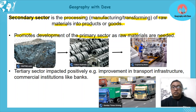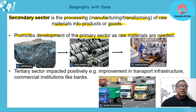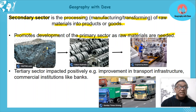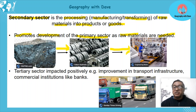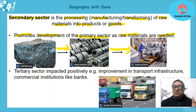Look at this example: iron ore is mined, then turned into iron and steel, and then the iron and steel goes on to make cars. So look at the movement of the raw material through the process — from extraction right through to the finished product.